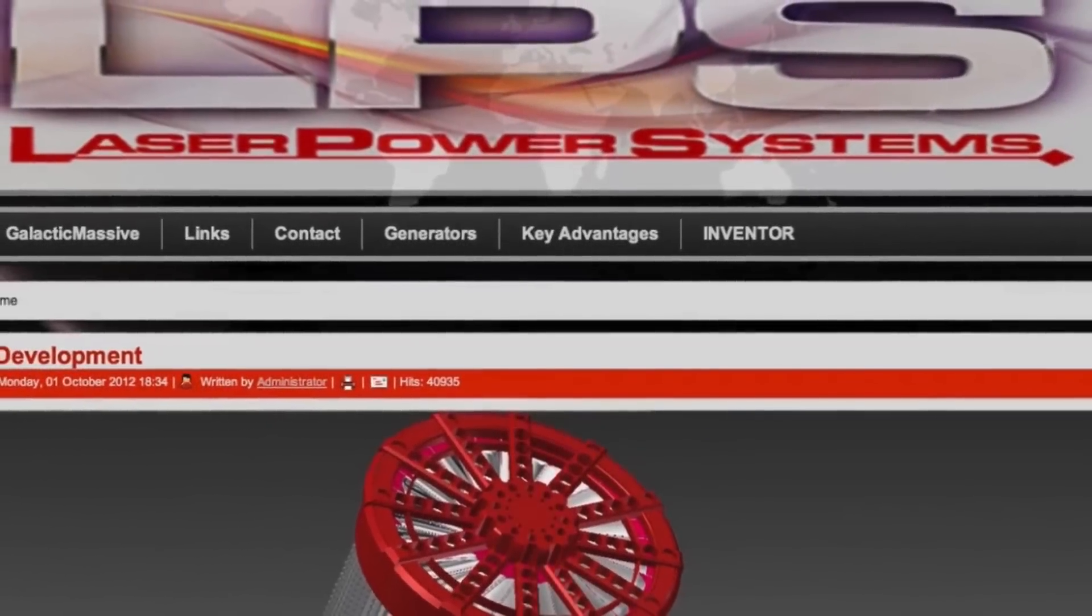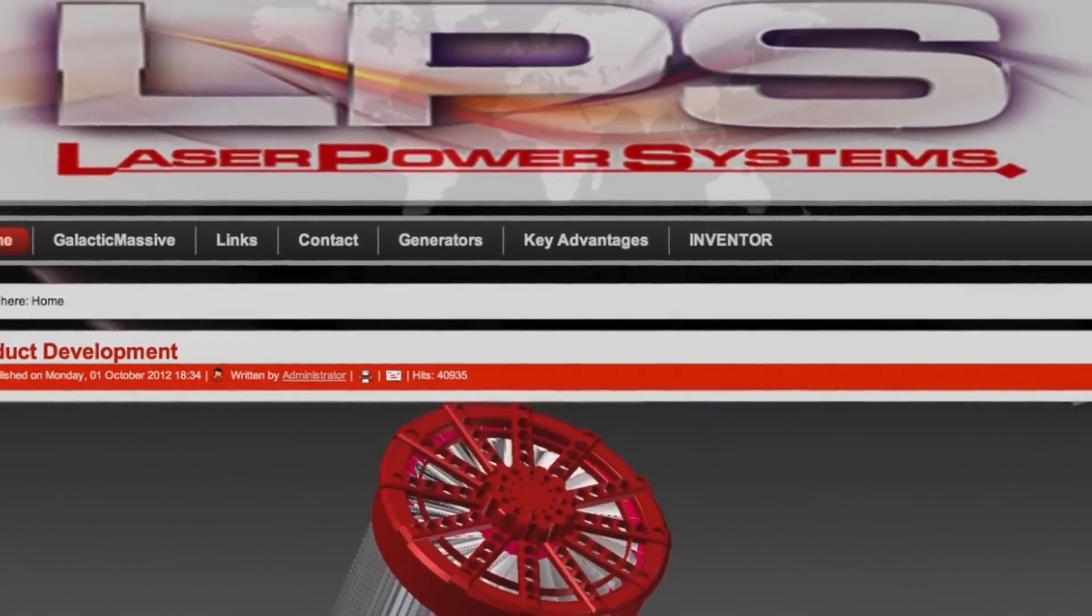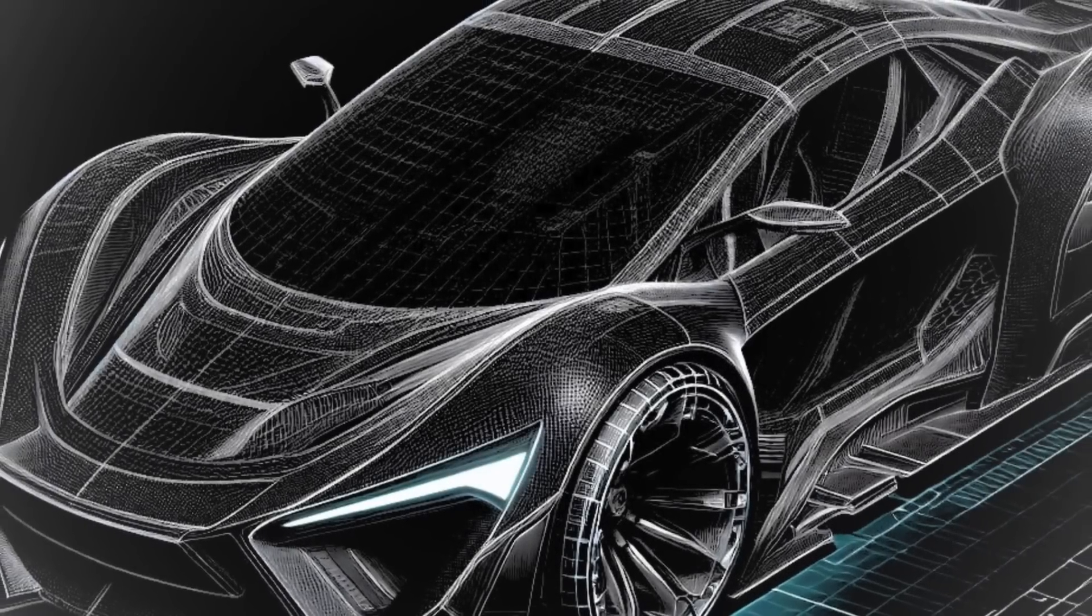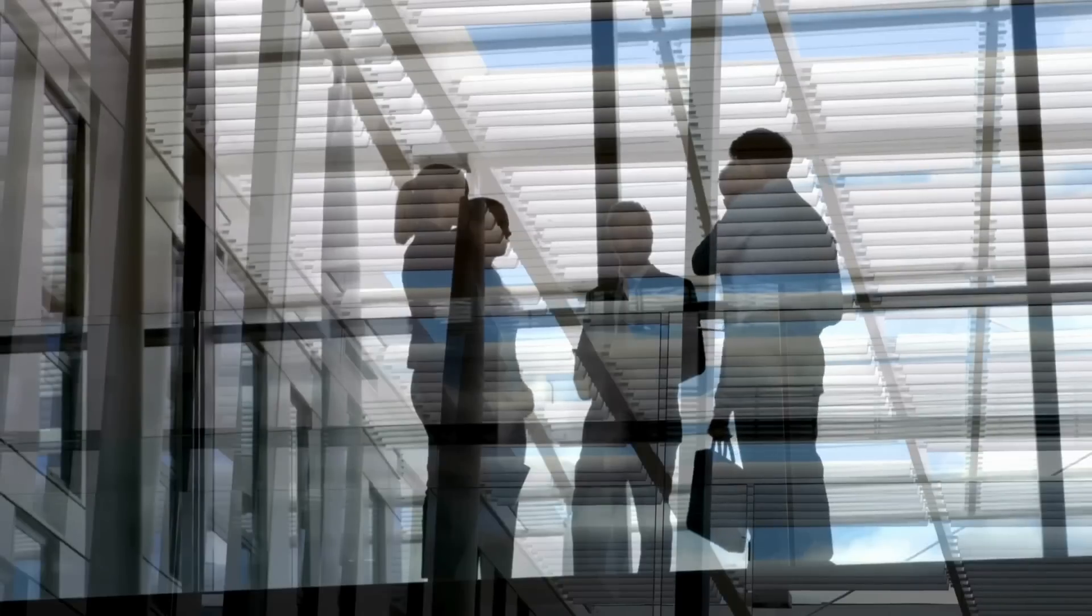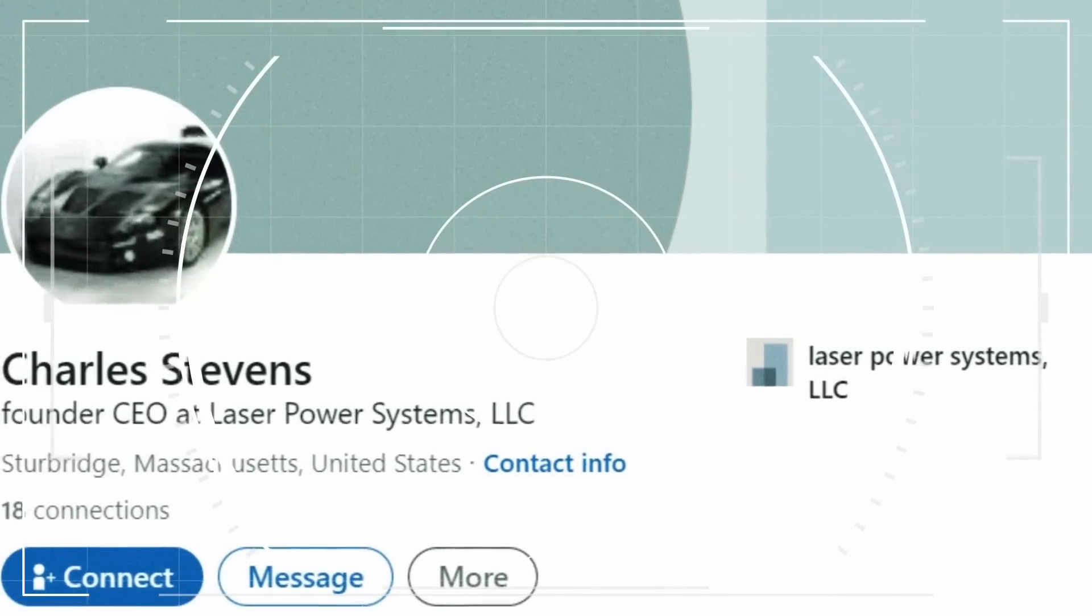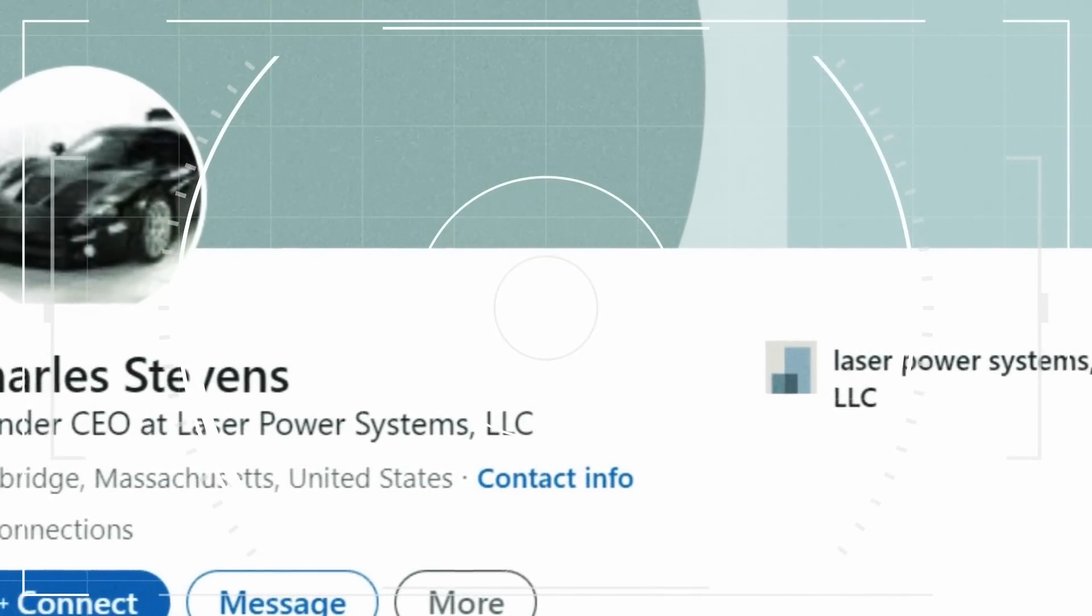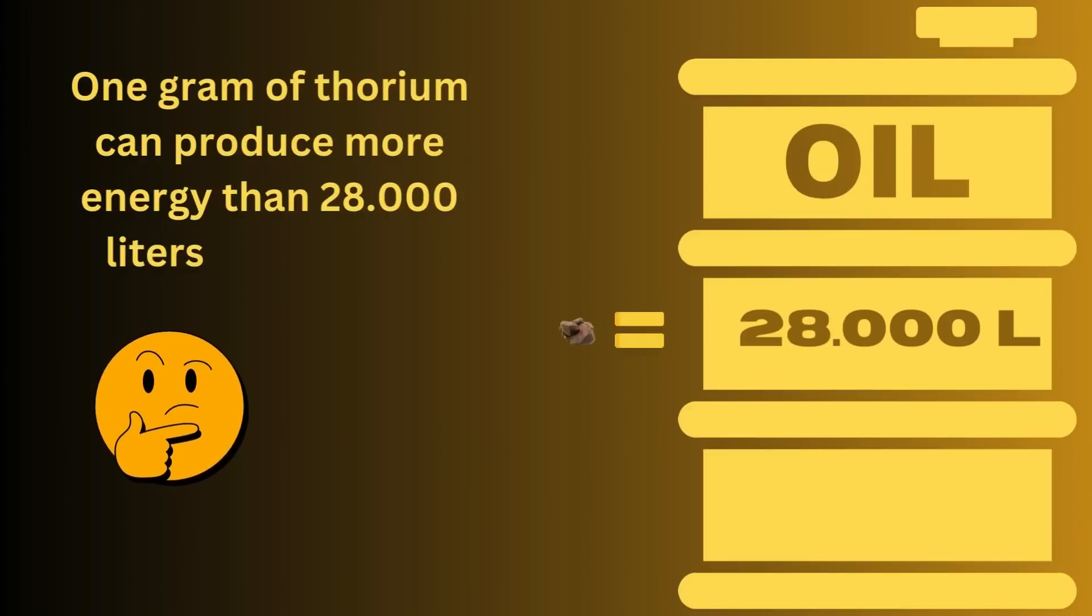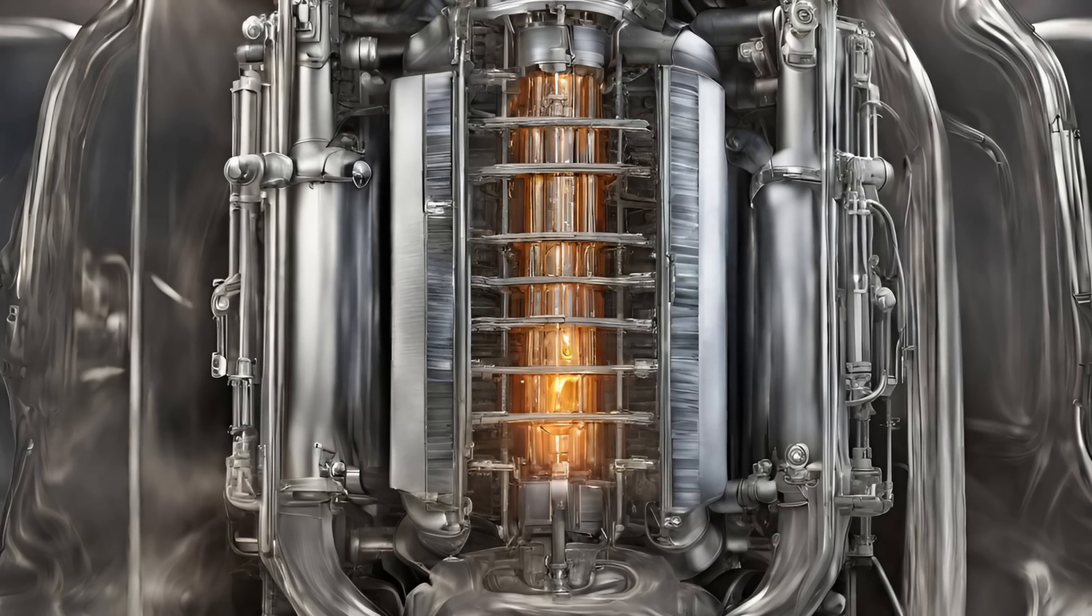In 2011, a company named Laser Power Systems announced plans to release a prototype of a nuclear-powered car within two years. The company, based in Connecticut, was working on a new propulsion method using thorium. According to the CEO of Laser Power Systems, Charles Stevens, just one gram of thorium can produce more energy than 28,000 liters of gasoline.